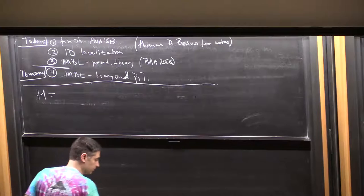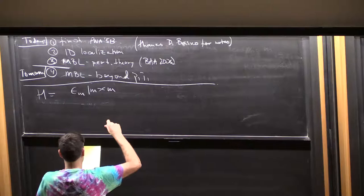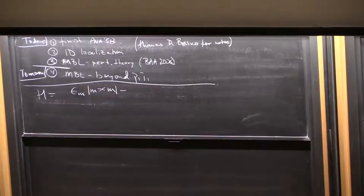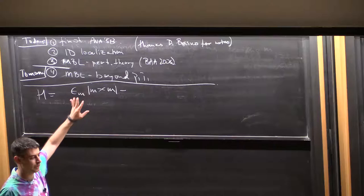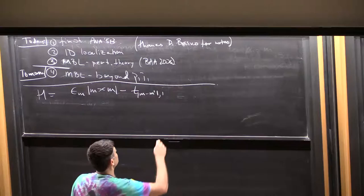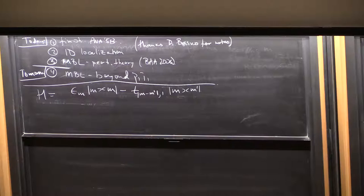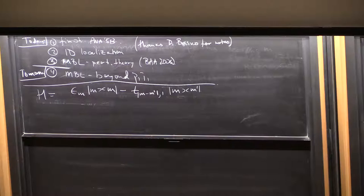So what's the idea? We have simple-looking Hamiltonians. As a cultural comment, one of the more profound contributions of Anderson was to do away with complicated Hamiltonians and to advocate the use of simple-to-state models that don't involve atomic wave functions and SPD wave sort of approximations — just lattice models. I think even that might have been controversial at the time.